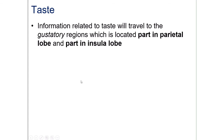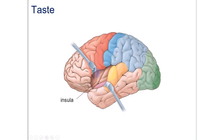All taste information travels to the gustatory region of the brain, which is located partly in the parietal lobe and partly in the insular lobe. If you pry open the lateral fissure between the frontal and temporal lobes, you will see the insular lobe, where the gustatory region processes taste, with part of it overlapping with the parietal lobe.